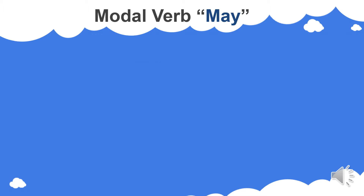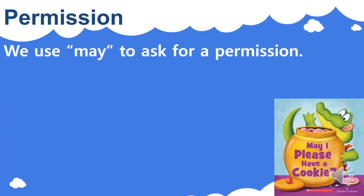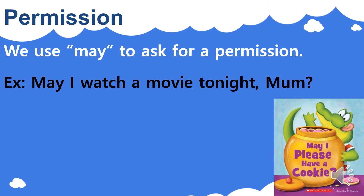Alright, so let's start with the modal verb may. Like we always say, a modal verb is used to indicate the mood or tense of the verb, and the modal verb may comes with other verbs to express permission or possibility. So let's explain each one. Permission — we use may to ask for permission. May I watch a movie tonight, mom? Here I'm asking mom if I am allowed to watch a movie tonight, so I'm asking for permission by using the modal verb may.